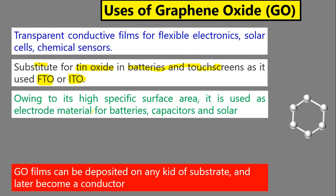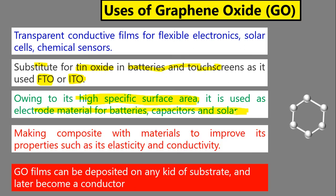Since graphene is a two-dimensional material, it has a very high specific surface area — meaning one gram of the material covers a very large area, measured in square meters per gram. Because of this high surface area, it provides more reaction sites, making it an excellent electrode material for batteries, capacitors, and solar cells.